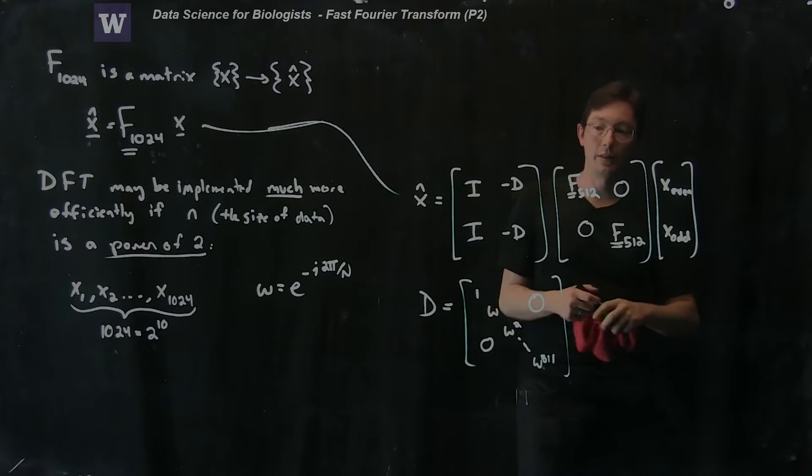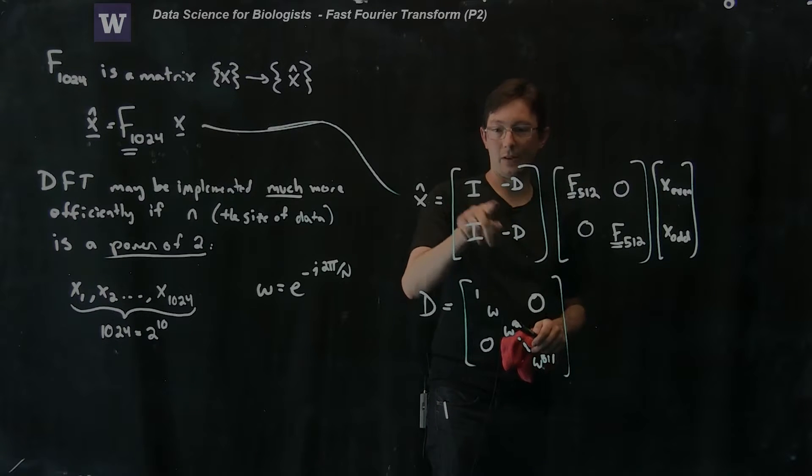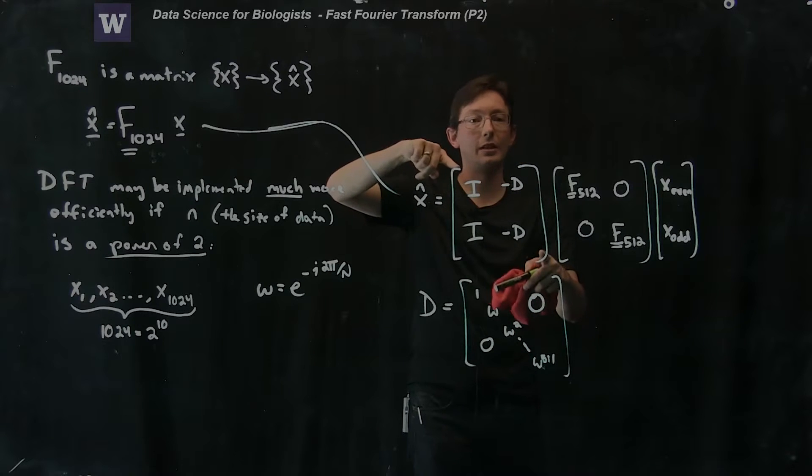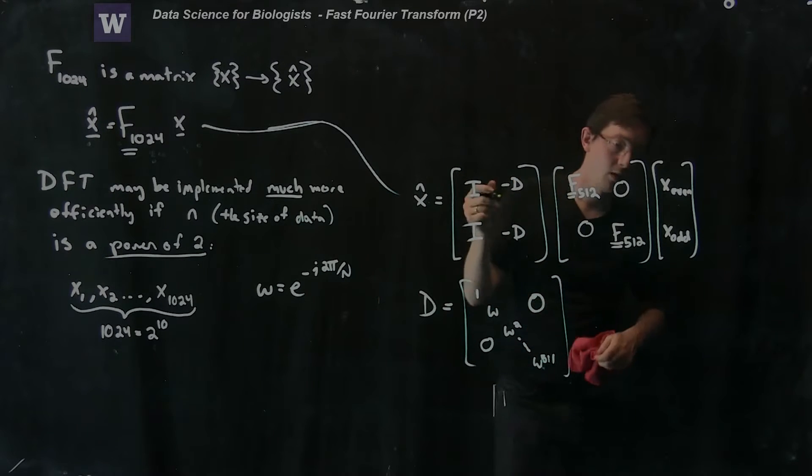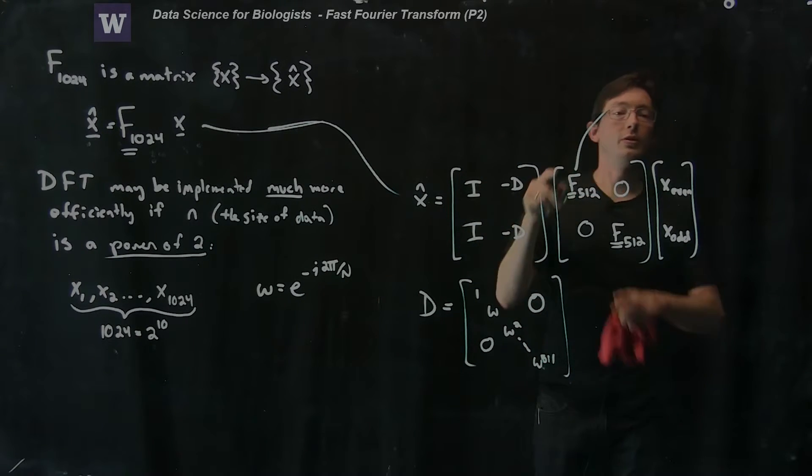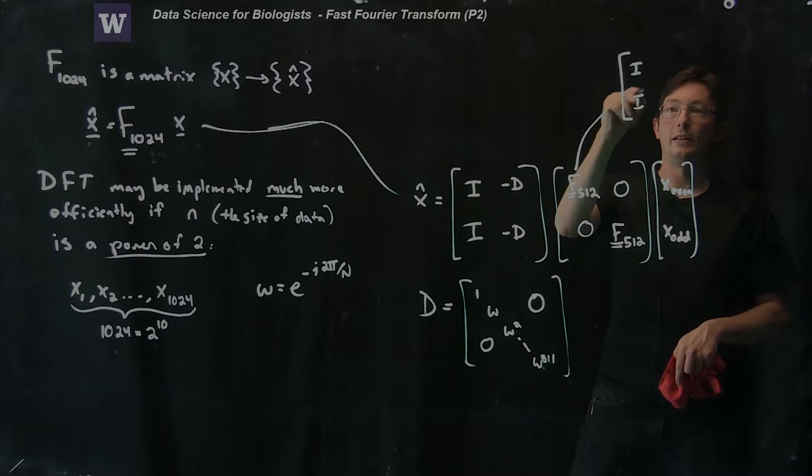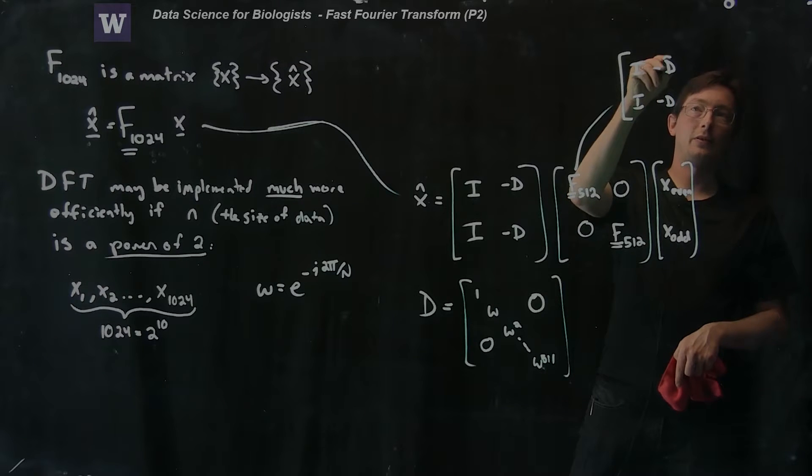And even better than that, a lot of these Ds, identity is mostly zeros. This diagonal matrix is mostly zeros. So doing this interleaving is also cheap. But notice that you can do the exact same thing with F512.